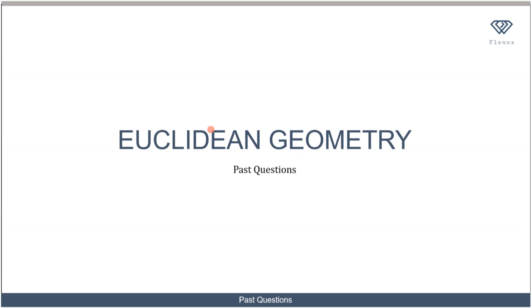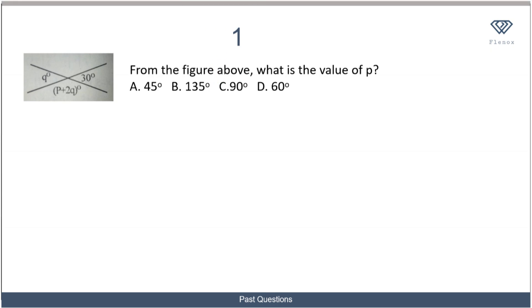Now we're going to be looking at some past questions to see how to apply the principles that we've learned to solve actual JAM questions. In this first question, we are told that from the figure above, what is the value of p? I'm going to draw it out so that it can be clear. So here you have q, here you have 30 degrees, and here you have p plus 2q.